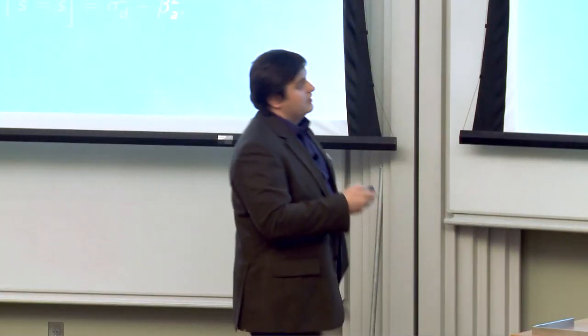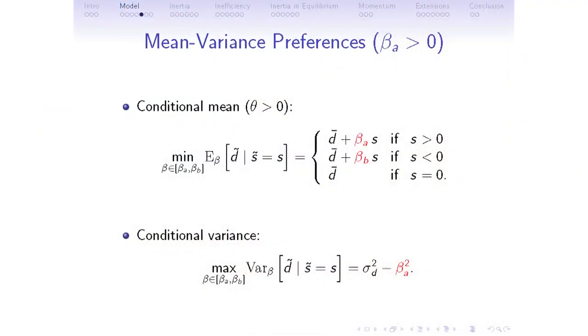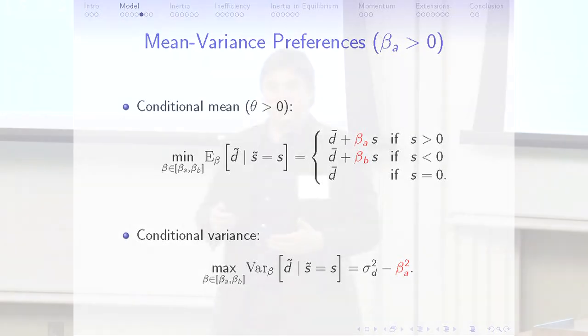If you contemplate a long position, there's a trade-off between the mean and the variance when you receive bad news: for the mean, you want to consider a high beta; for the variance, you want to consider a low beta. Keep this in mind.